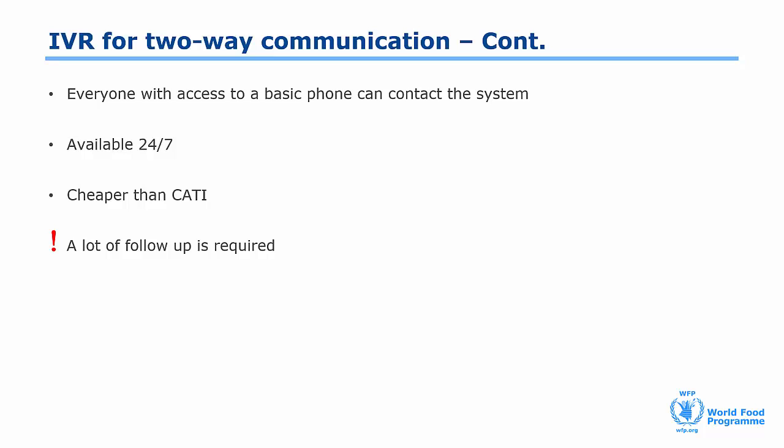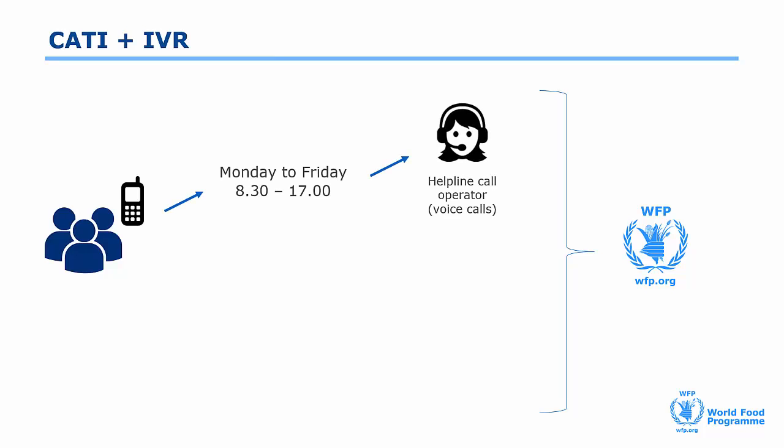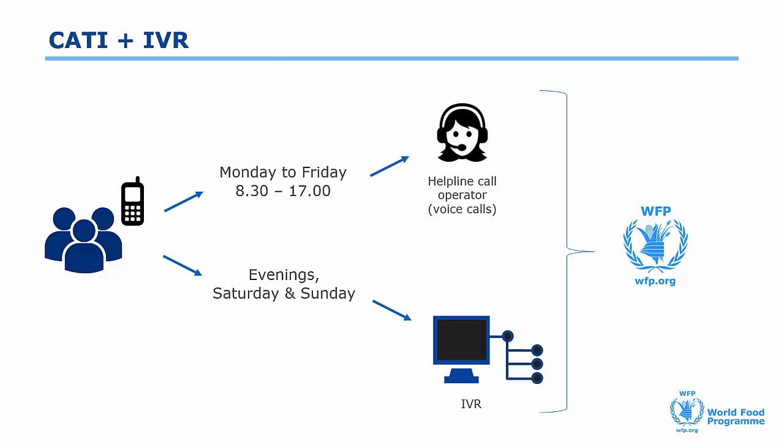A good way to design a two-way communication system could be to integrate CATI with IVR. In this system, live calls are conducted or received during office hours and the same process is used via IVR for the rest of the time. The same operators would then be tasked with following up with the IVR calls and receiving incoming calls during the day.